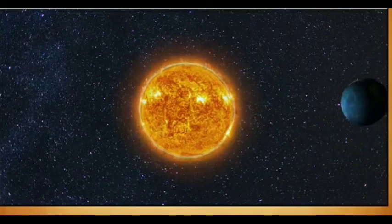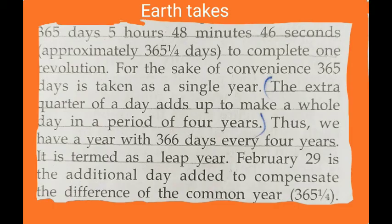Do you know what is the time taken by the Earth to complete one revolution? It is 365 days, 5 hours, 48 minutes, and 46 seconds — approximately 365 and one-quarter days. But for convenience, we always say it is 365 days. So we set aside that one-quarter day, which is 5 hours, 48 minutes, 46 seconds.